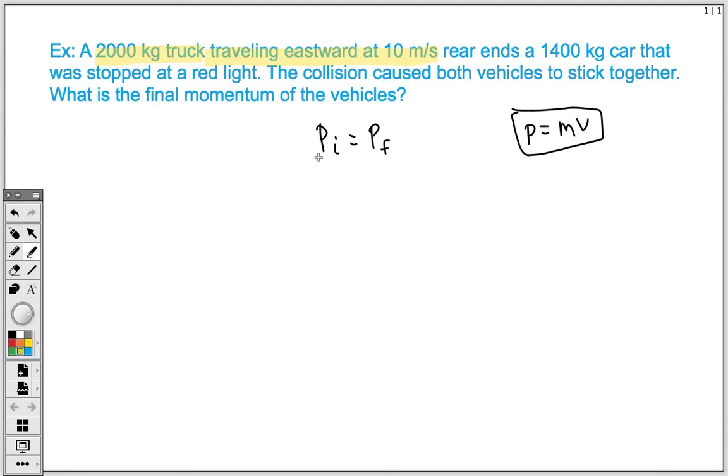We also have our car, and we know that initially we have 1,400 kilograms, and it was stopped at a red light. So we know that its initial momentum was really zero because its initial velocity is also zero. What's unique about these inelastic collision problems is that we actually are going to have to add up the two vehicles together to get our final momentum.